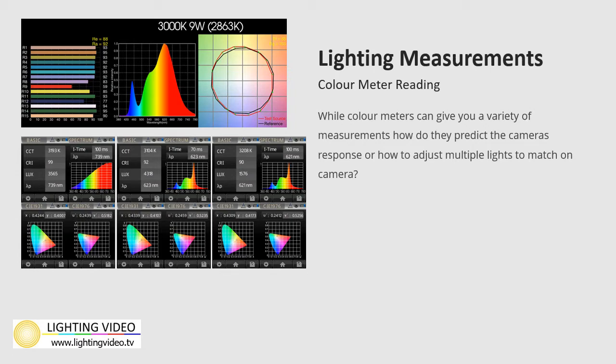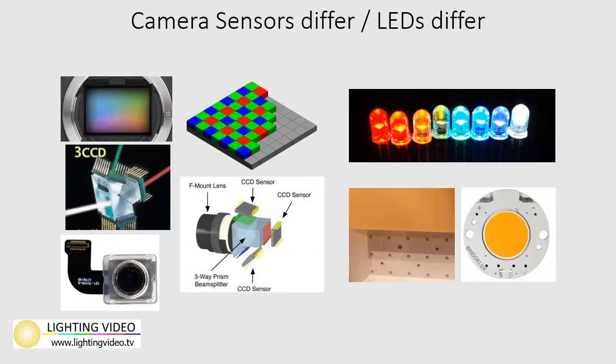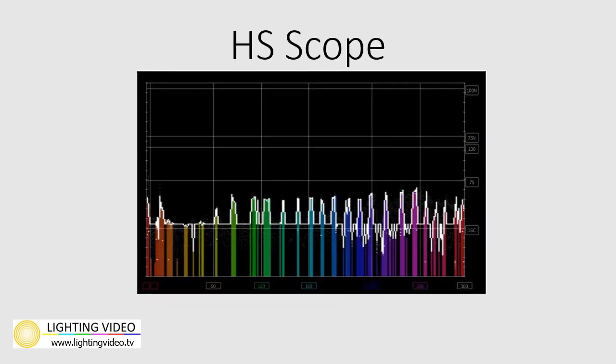What spectral values do I need to alter for different cameras? Camera sensors differ, as do LEDs. Ideally, we want to achieve a match between these two variables to create harmony on camera. That is why I co-created the HS Scope. It displays the camera's electronic chroma signal, providing a reference guide. Using this reference, you can adjust your LED lights to meet the needs of the camera to reproduce colors accurately.